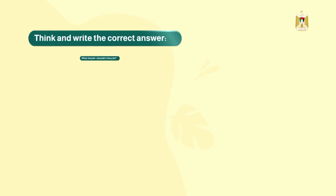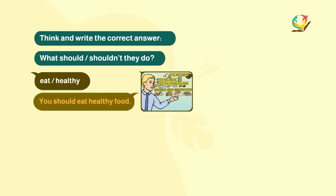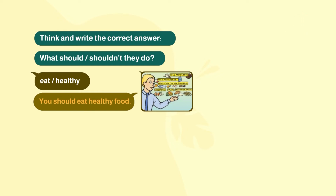What about Mr. Ali in this picture? He advises you: you should eat healthy food. In exercise number two you will write good advice using the words 'should' or 'shouldn't'. Should means عليك، and shouldn't means لا ينبغي عليك.